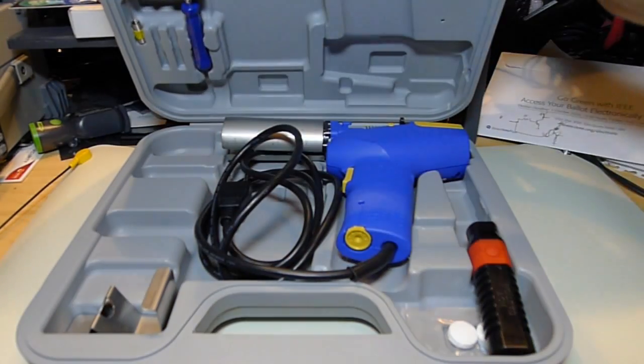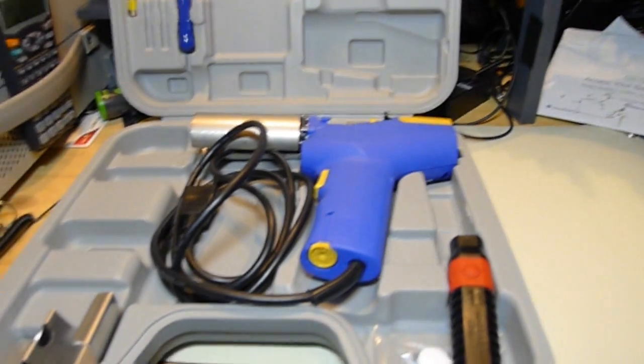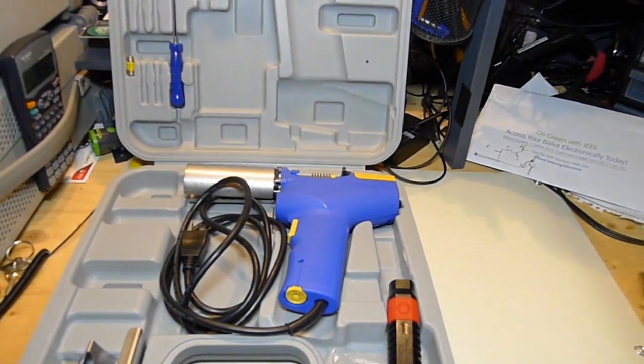So here's a little review, the Hakko FR300. This is a desoldering gun that I just got, so I thought I'd show you how it works if you're interested in getting one.